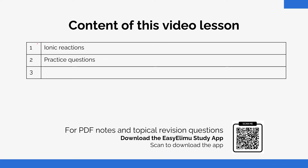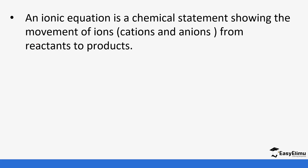For this topic we're going to see some of the ionic reactions. Being told to write an ionic equation is very common in a chemical reaction, so we are going to see what some of those reactions are. First of all, an ionic equation is a chemical statement showing the movement of ions — that is the cations and anions — from reactants to products.